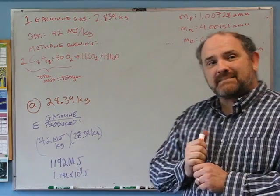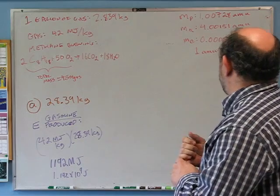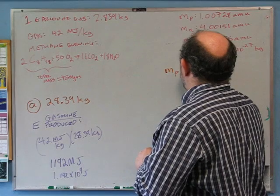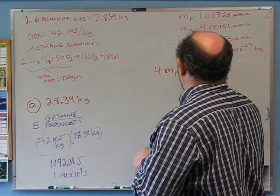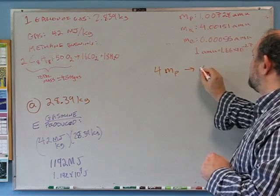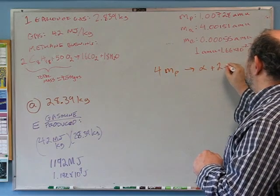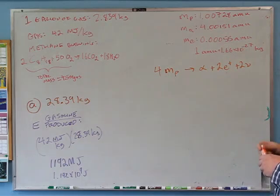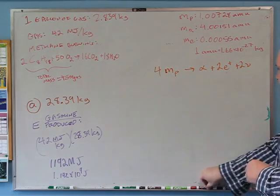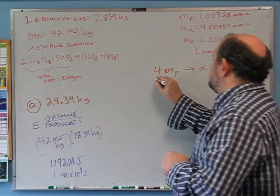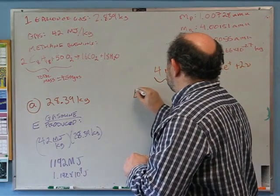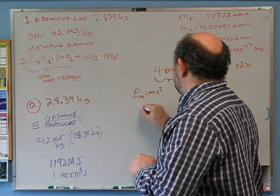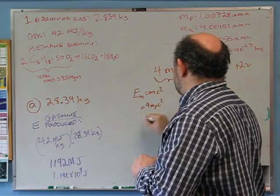How much energy do you get out by burning one hydrogen atom? The fusion reaction is: 4 protons → alpha particle (helium nucleus: 2 protons + 2 neutrons) + 2 positrons + 2 neutrinos. I'll figure out the mass energy of each side. The energy in the mass on the left is 4 times the mass of the proton times c² = 4 × 1.00728 amu × 1.66×10⁻²⁷ kg/amu × c².